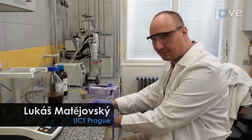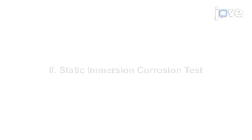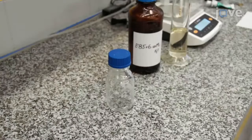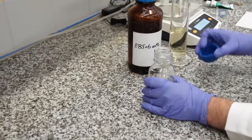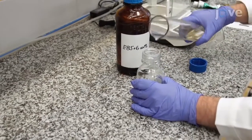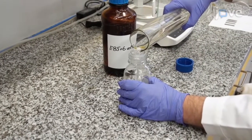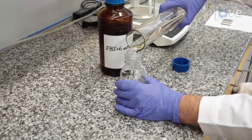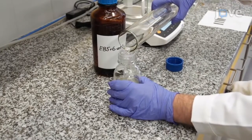Demonstrating the procedure will be Lukasz Mateuszki, a member of my team. To test the static immersion corrosion of metal-liquid systems, begin by adding 100 to 150 milliliters of the tested liquid corrosion environment to a 250 milliliter bottle equipped with a hook for hanging an analyzed sample.